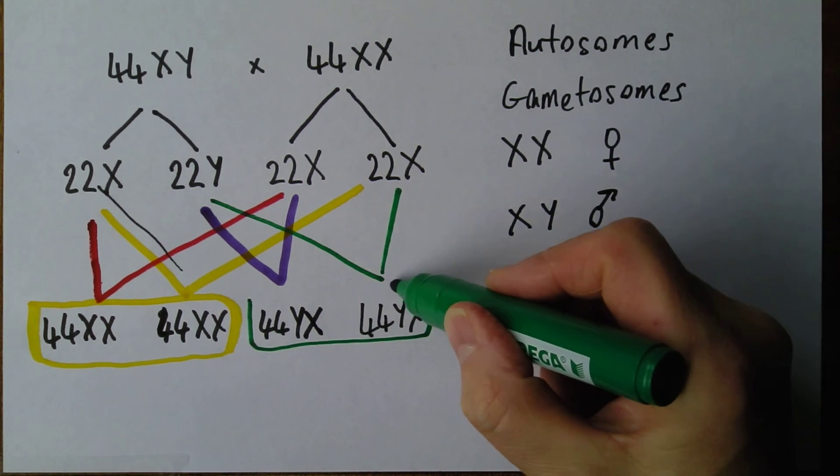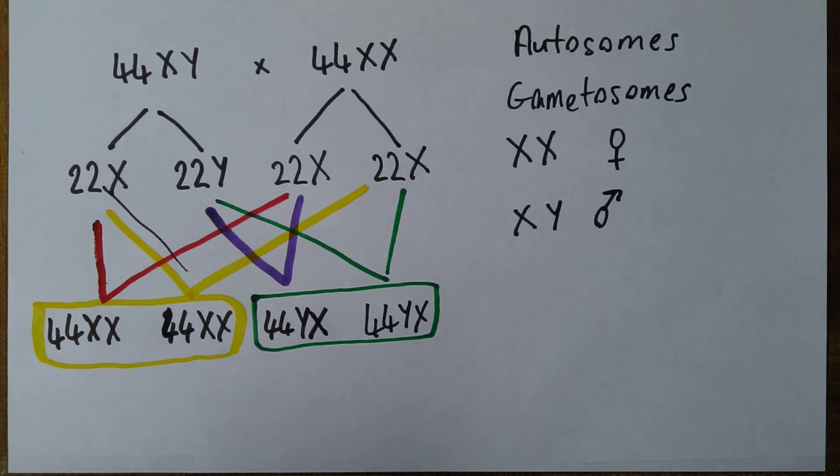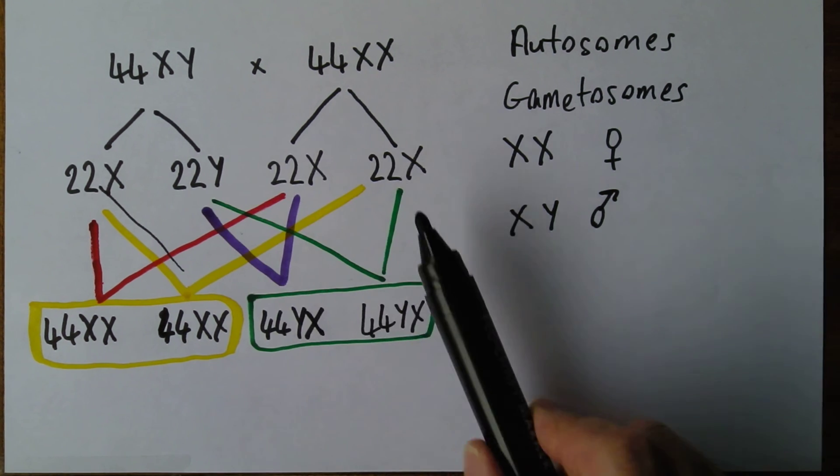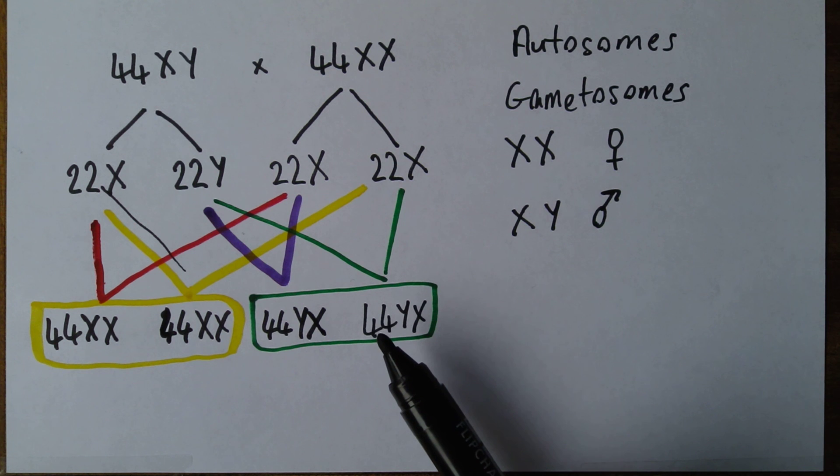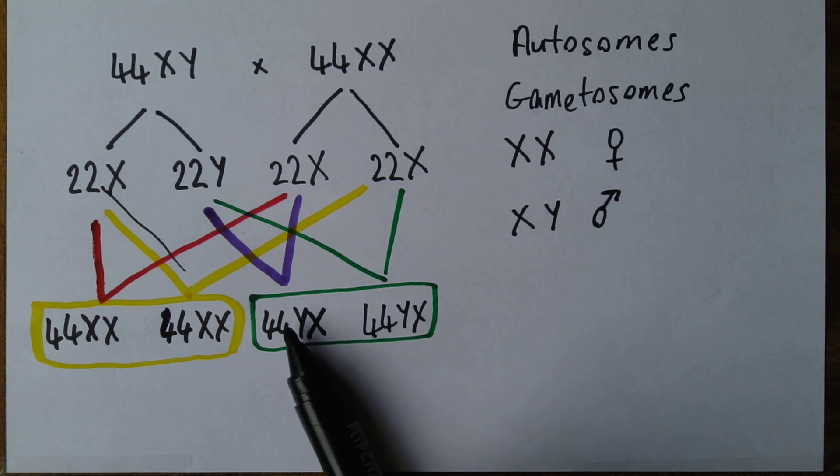So determination of sex is relatively straightforward. In essence, it's determined by whether the fertilizing sperm carries the X or carries the Y chromosome. So on average we would expect 50% girls, 50% boys to be born. And long may it remain so.